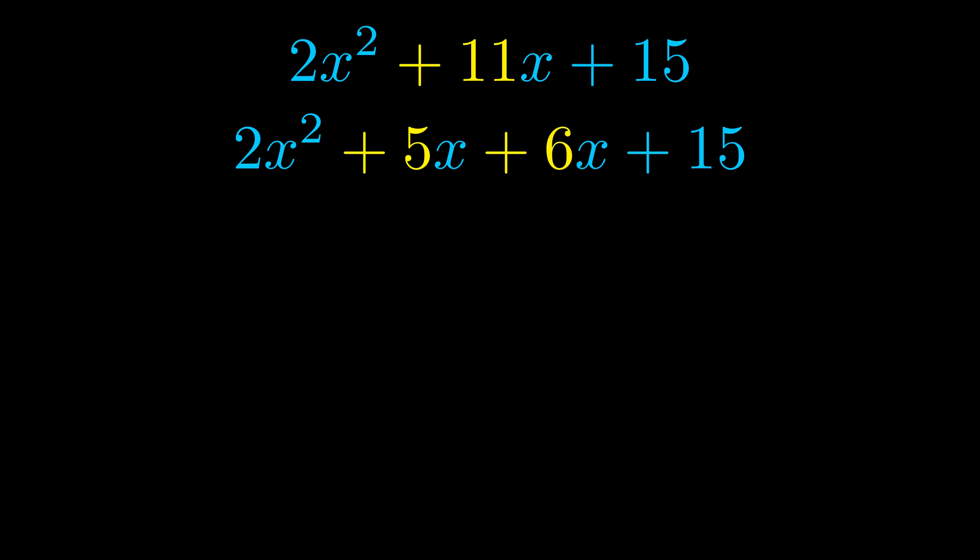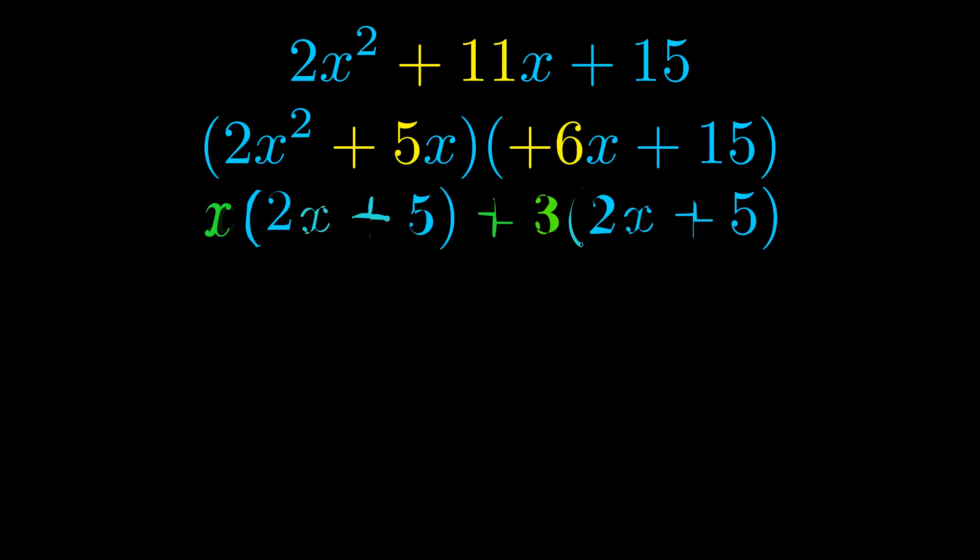Once we've done this we go ahead and put parentheses around the first term and the last term. And we do that so that we can take the greatest common factor out of both terms. We can see the greatest common factor is now outside in green.